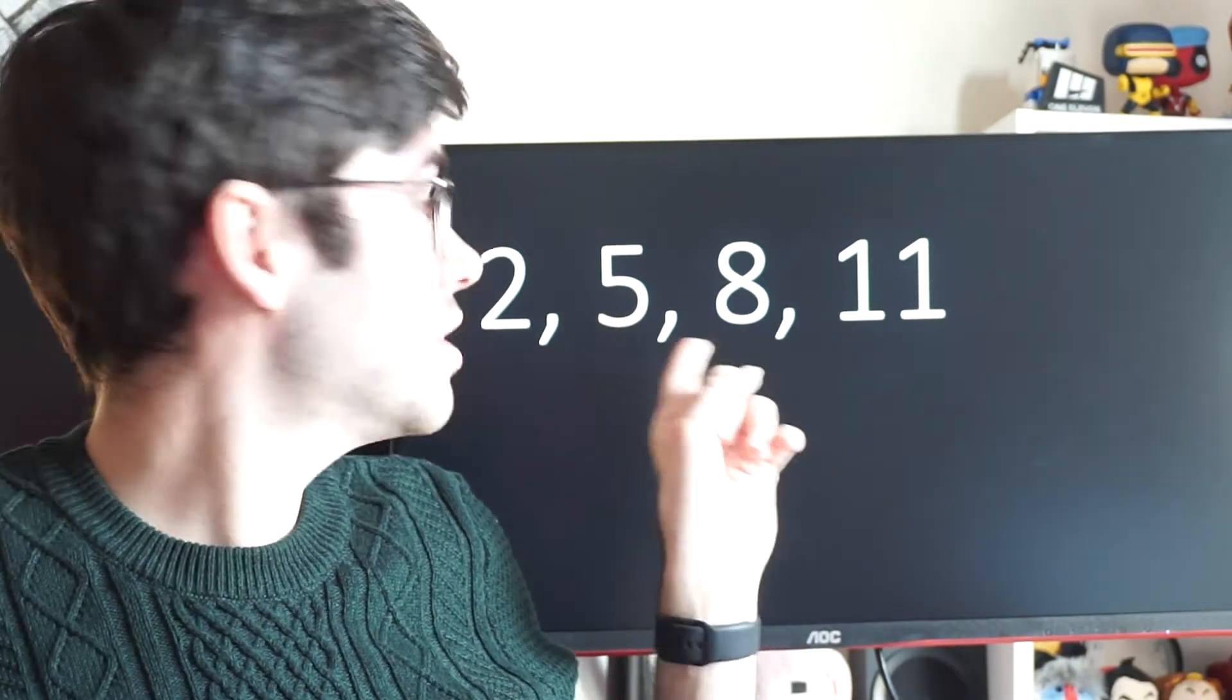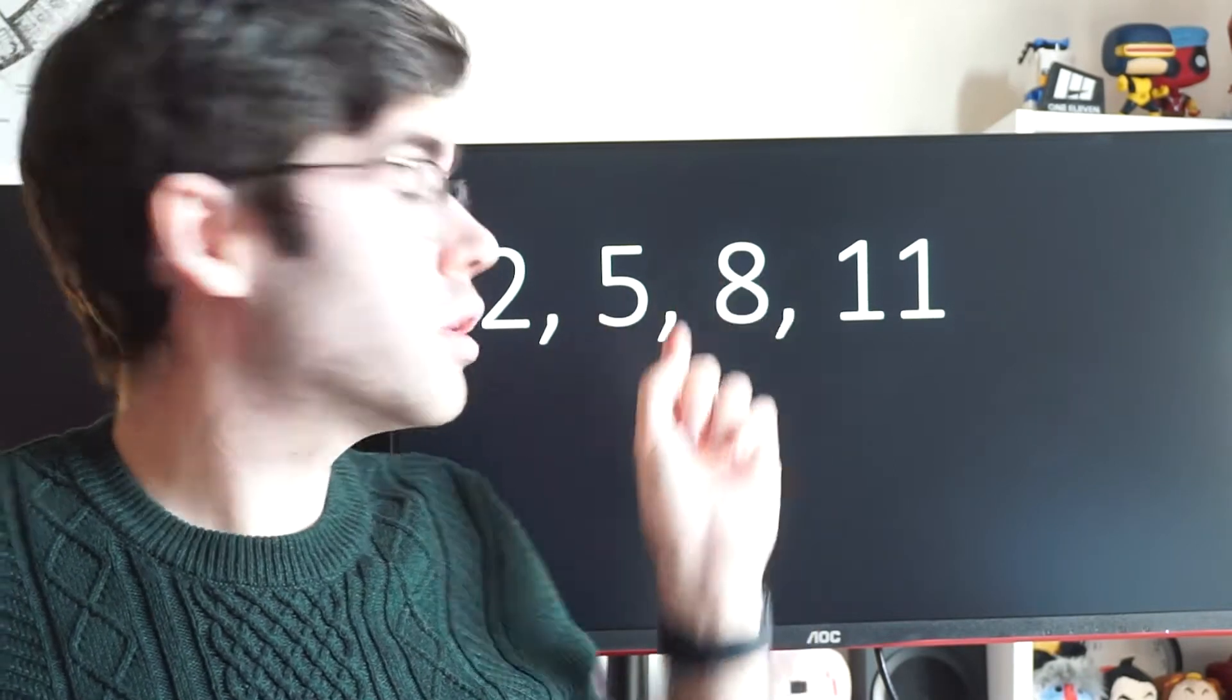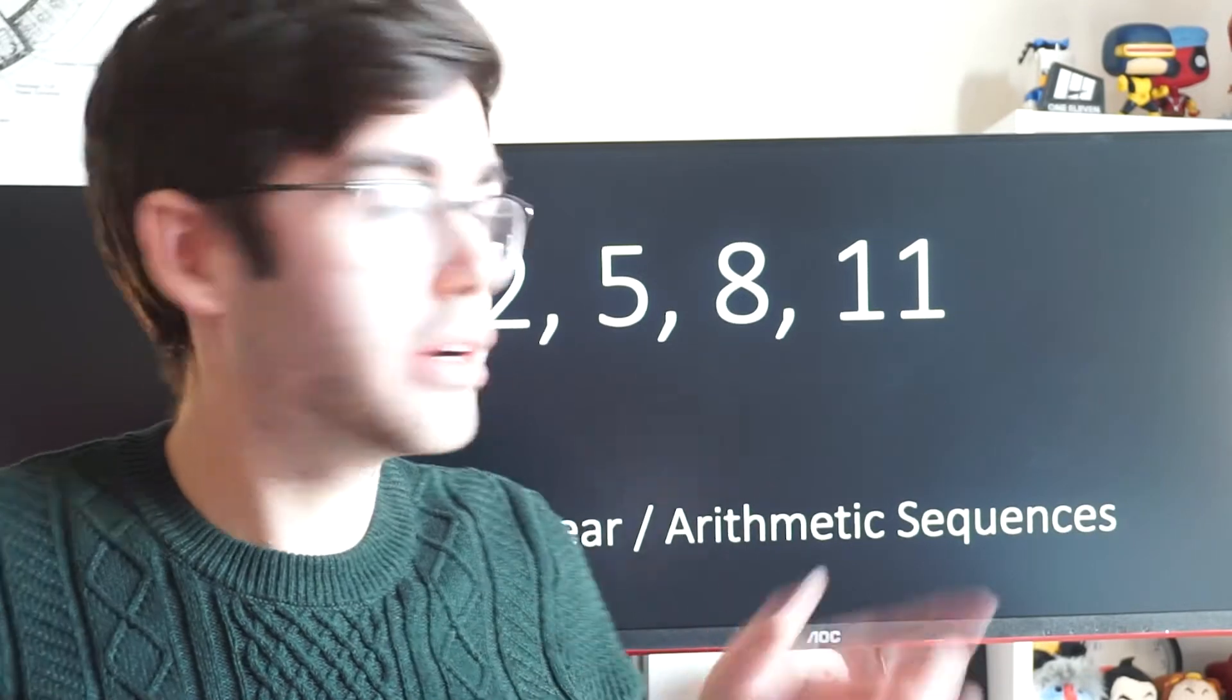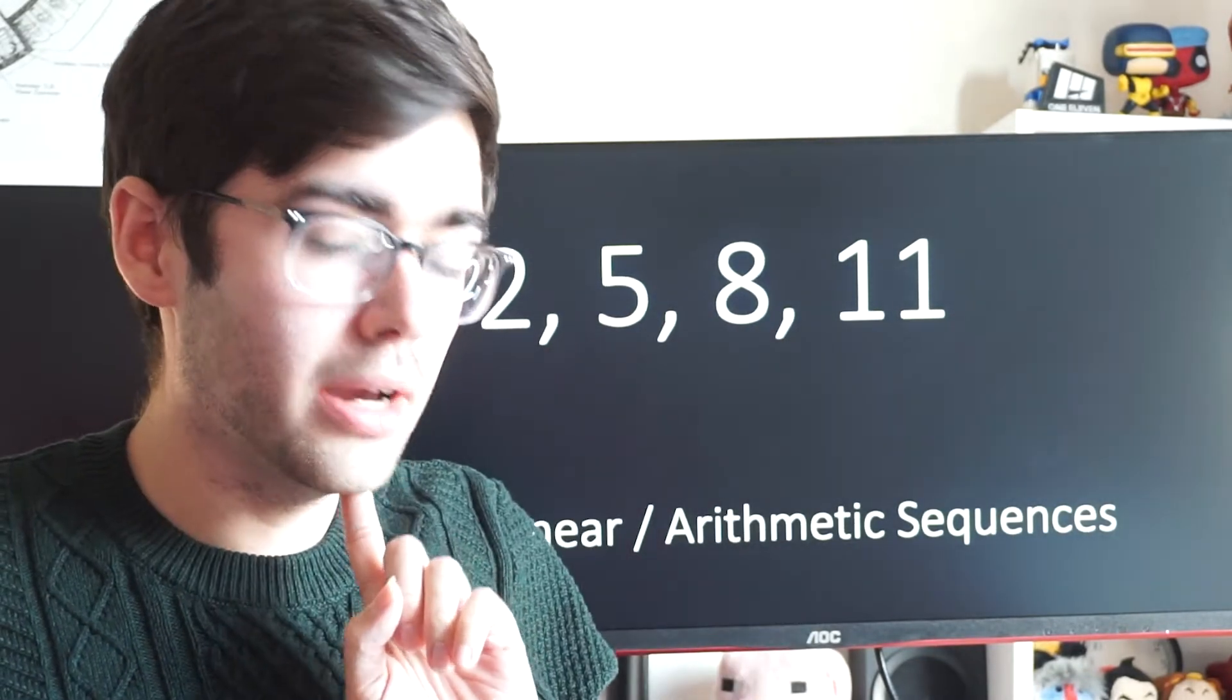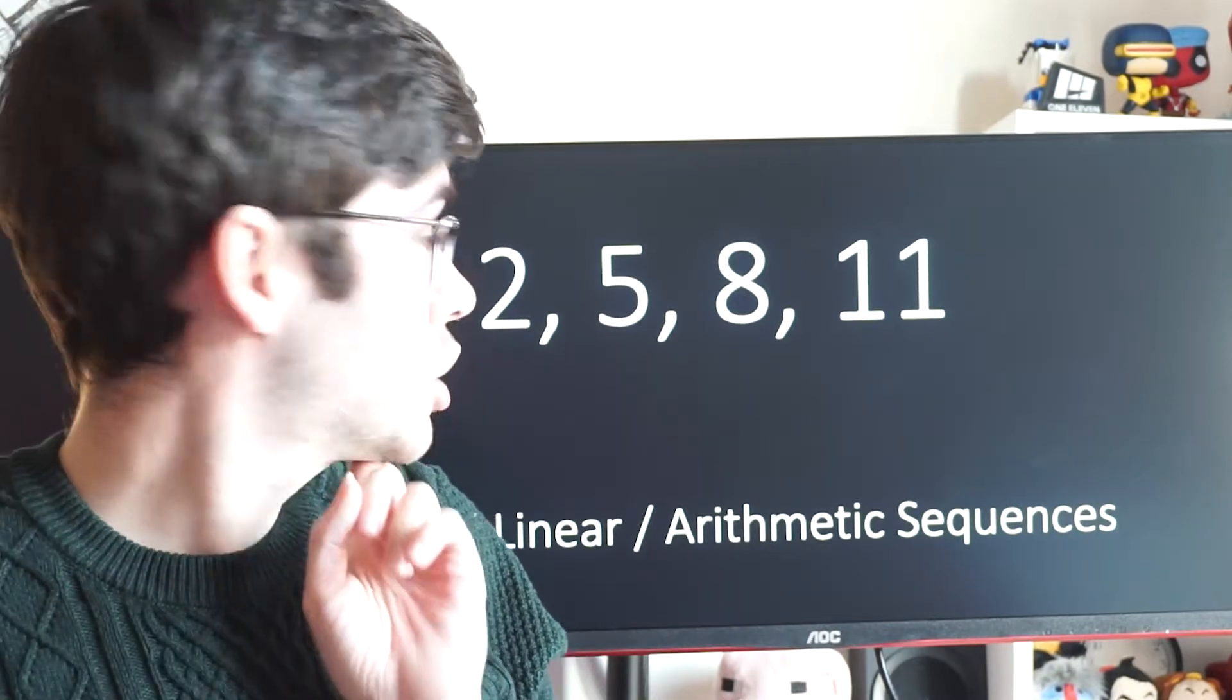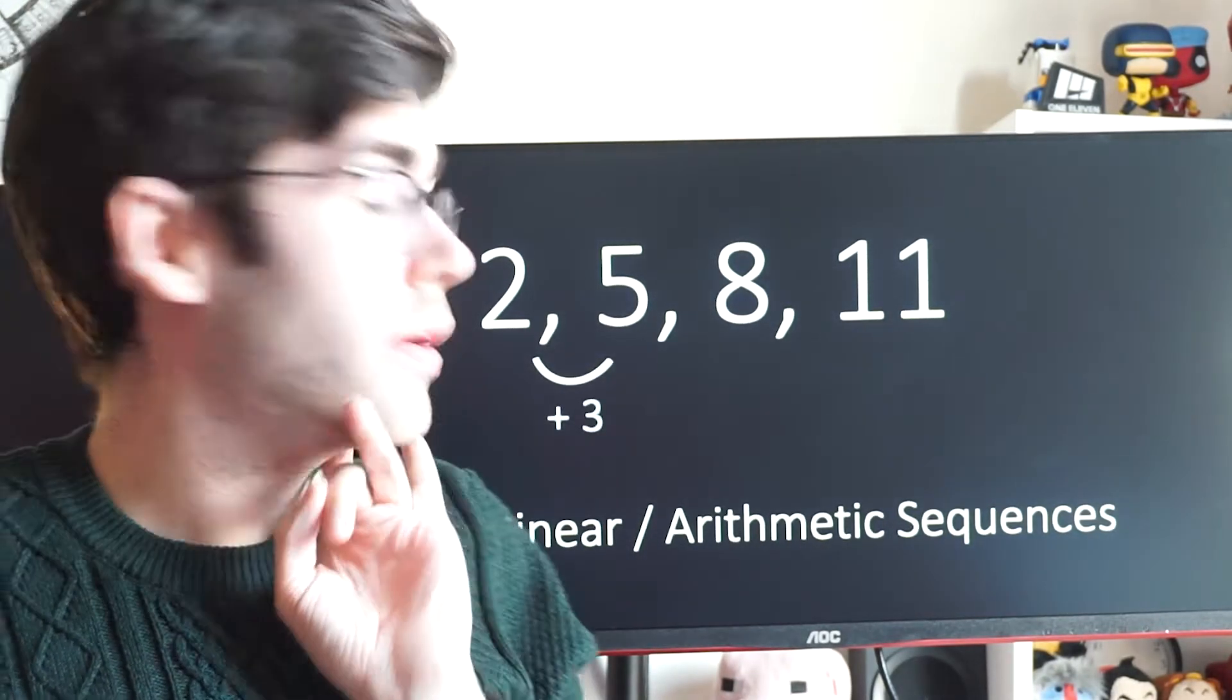are sequences that increase or decrease by the same amount each time. If you look at this sequence here, we're going from 2 to 5 to 8 to 11. This is called a linear or an arithmetic sequence if the jump is the same each time. What is the jump on this sequence? What's it changing by each time? If we have a look, it's going up by 3.